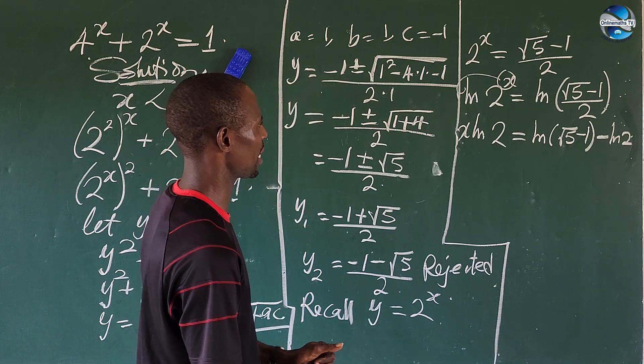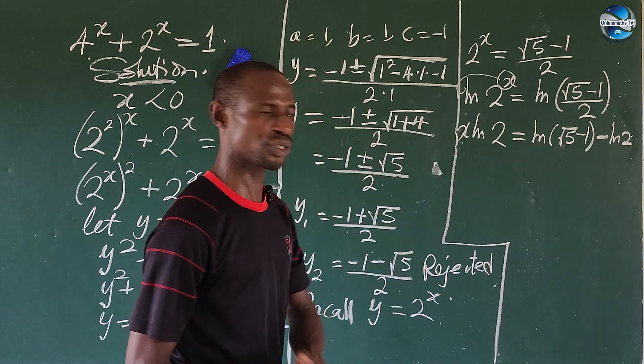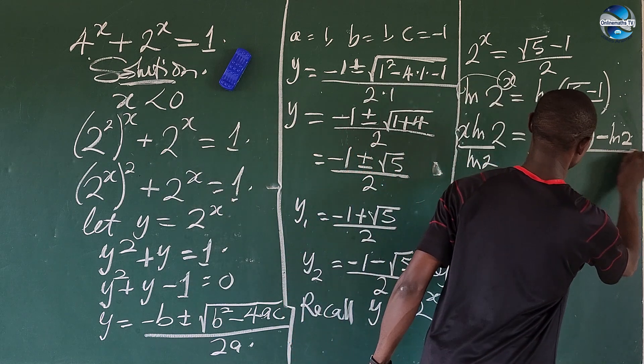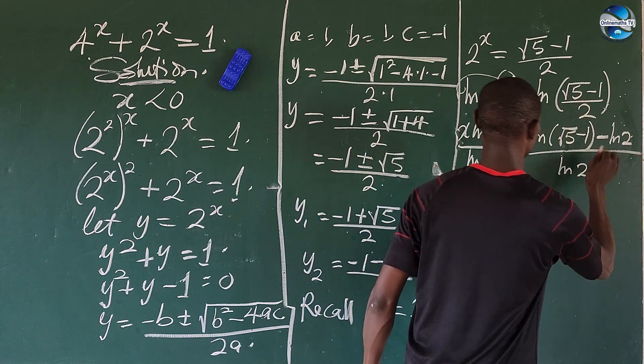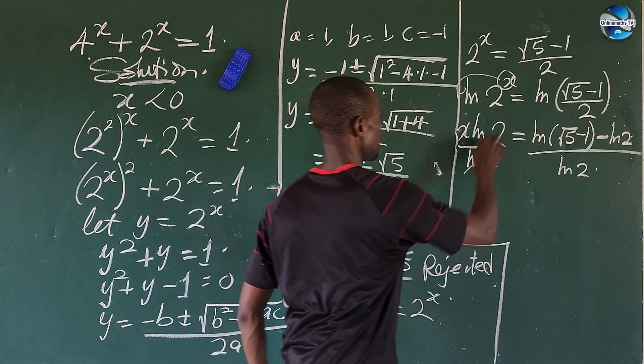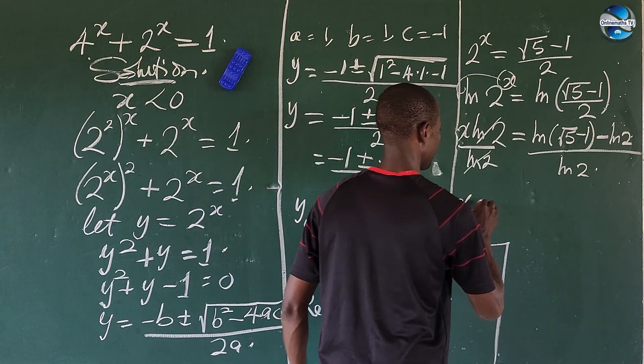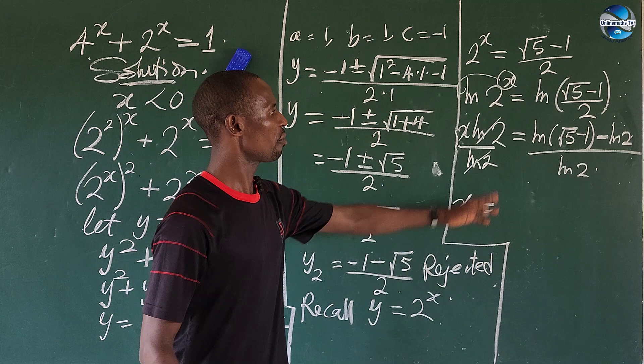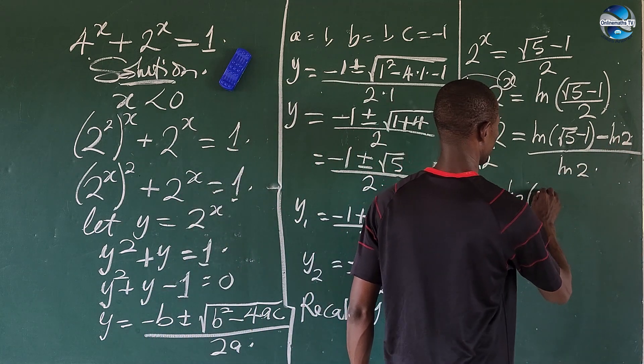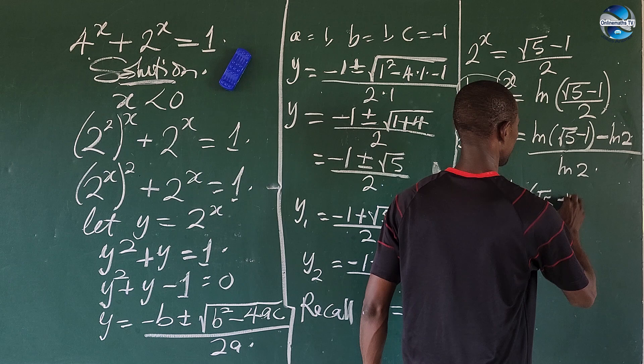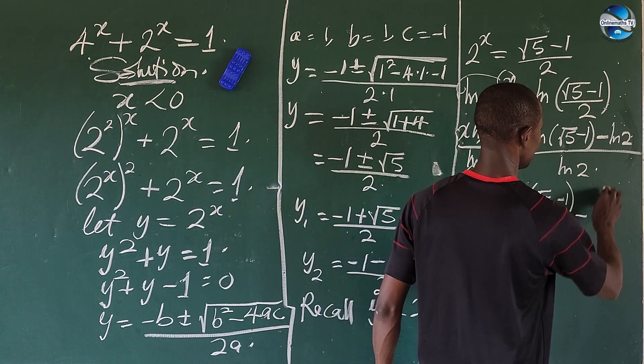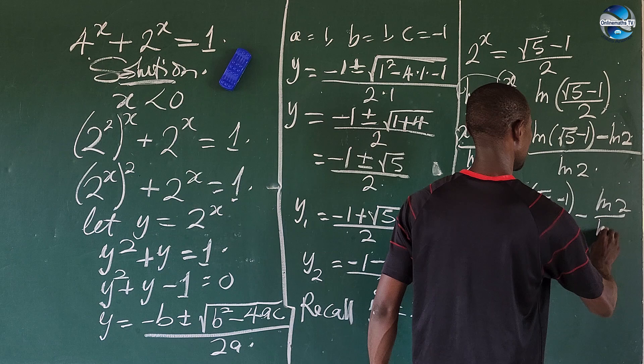What do we do next here now? We divide by ln of 2. So we divide this side by ln of 2, we equally divide every term by ln of 2. So this leaves the system and we're going to have our x equal to. Now we can split this here and split this here. So we have ln bracket the square root of 5 minus 1 close bracket all over ln of 2 minus ln of 2 all over ln of 2.